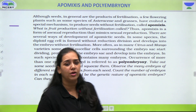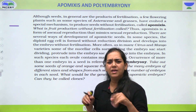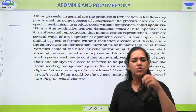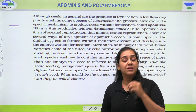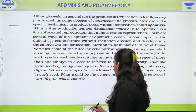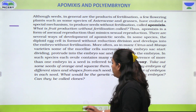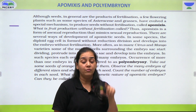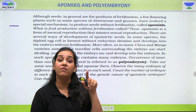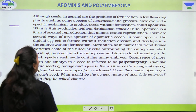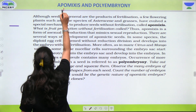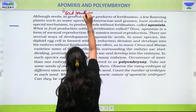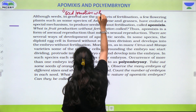Ab hum baat karte hai apomixis and polyembryony ke baare mein. Many students find this confusing, but we are going to simplify this. Toh sabse pehle hum lete hai definition. Apomixis ka matlab kya hai? Apomixis mein aapko milega seed without fertilization. Parthenocarpy kya tha? Fruit without fertilization — but vahan peh seed formation nahi ho rahi thi. Yahan peh apomixis mein kya hoga? Seed formation without fertilization.